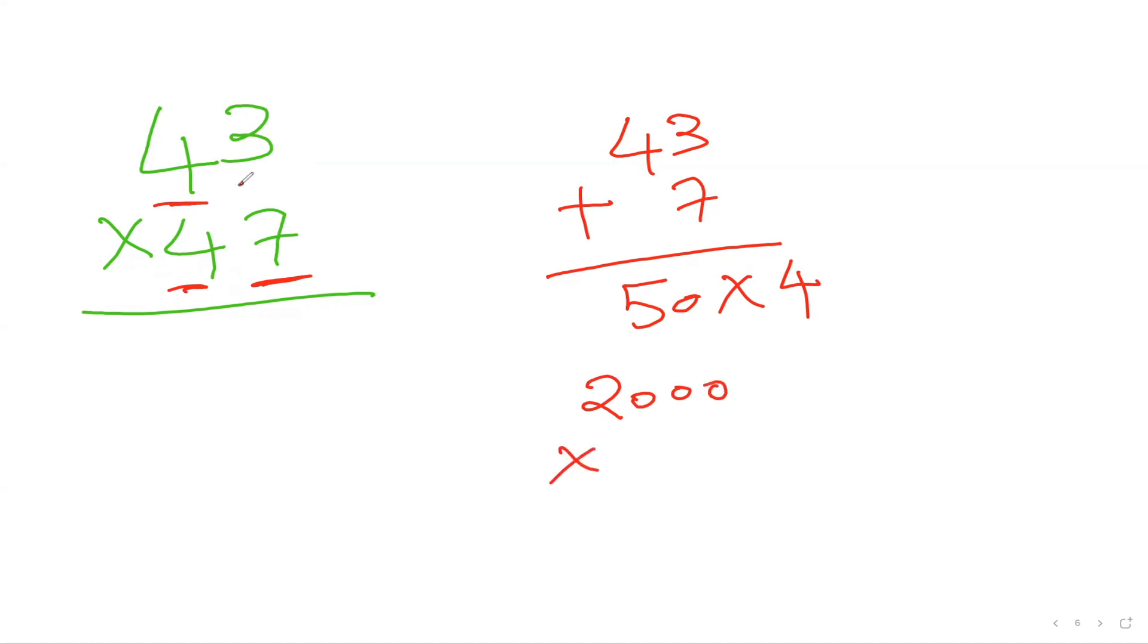Once you get this answer, you're going to add extra zero to that. And then you'll multiply your last digit, 3 times 7, which is 21. And then you plus that. So that is going to be 2021, which is your final answer.